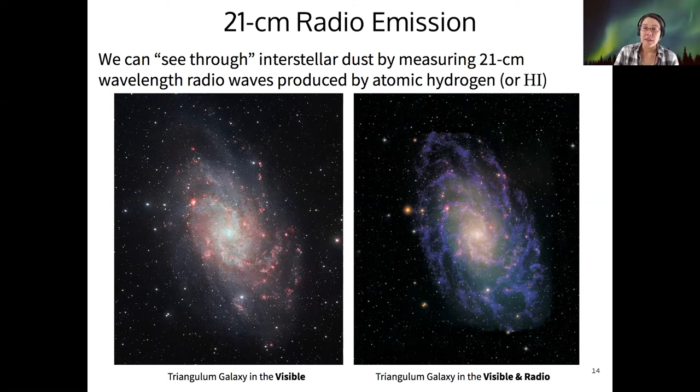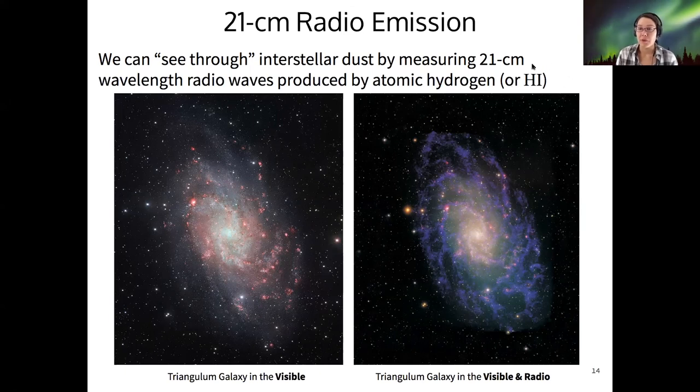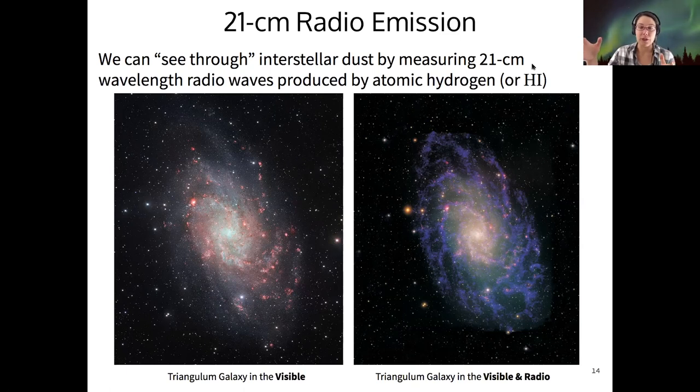So these are called H1 regions, as opposed to those red H2 regions that glow because of those young stars nearby. And we can use them to map out the location of hydrogen gas in galaxies.